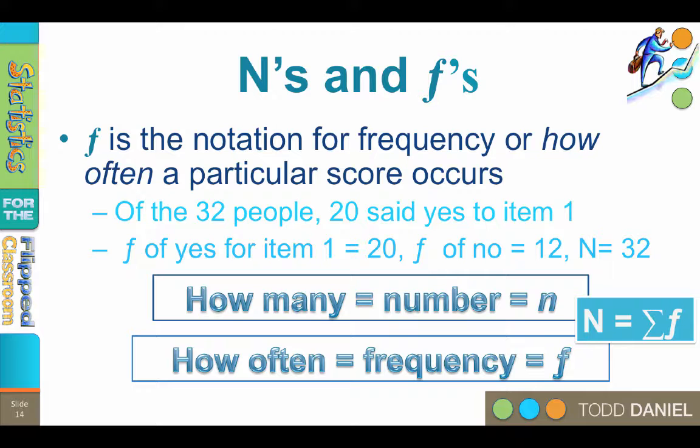There is a consistent relationship between n and f. If you add up the frequency of everyone who said yes to the first item, 20, and everyone who said no to the first item, 12, you get our total n of 32. So n is the sum of the frequencies.